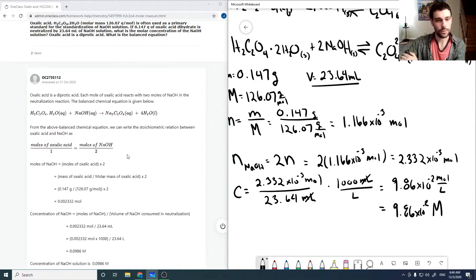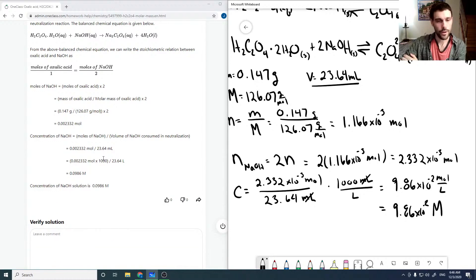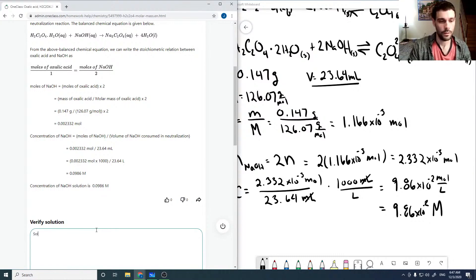So if we check through our solution here, get the number of moles. It's about, it's double that. So 2.332 divided by the volume with the proper unit conversion. And we get 0.0986 molar or 9.86 times 10 to the minus 2. So that looks good.